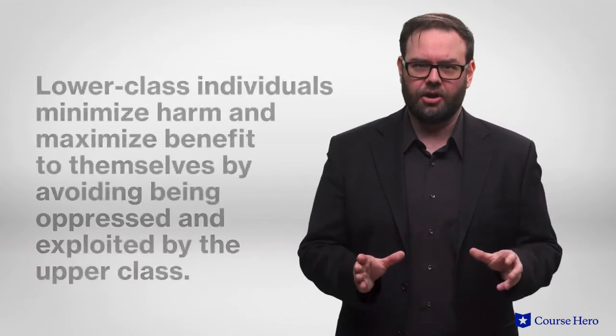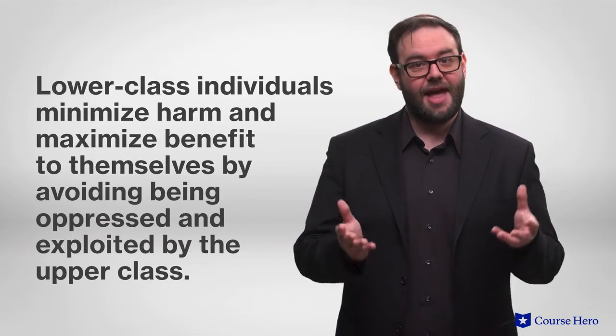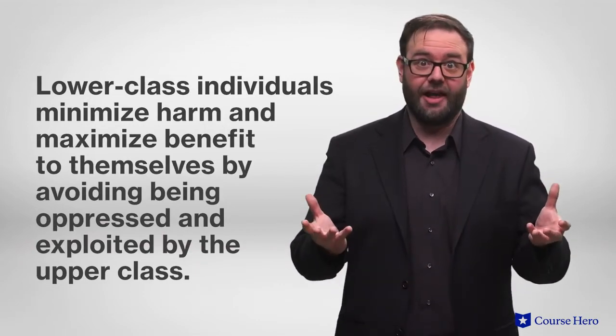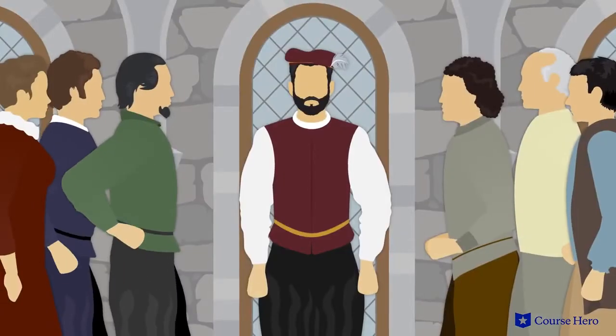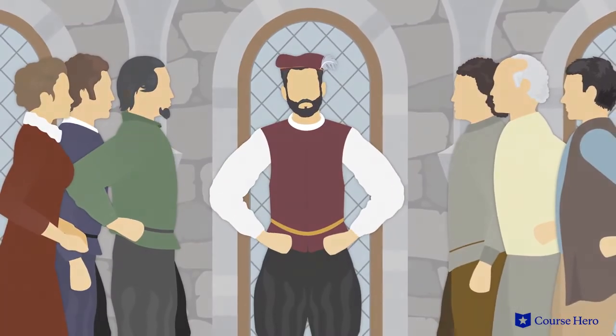Conversely, lower class individuals minimize harm and maximize benefit to themselves by avoiding being oppressed and exploited by the upper classes. The nobles and the commoners have interests that cannot both be satisfied at once. Supporting the interests of one class will automatically subvert the interests of the other.